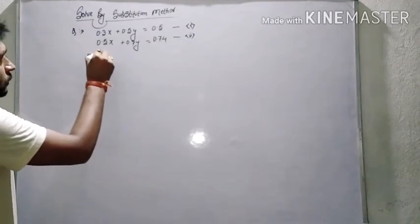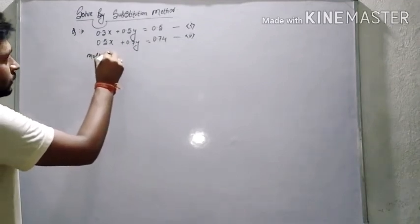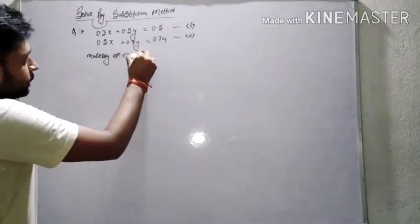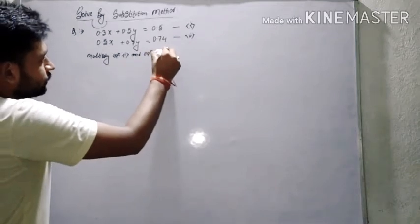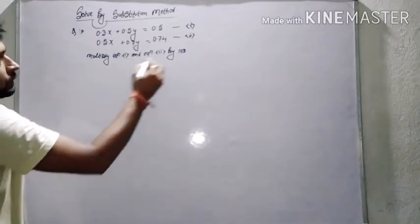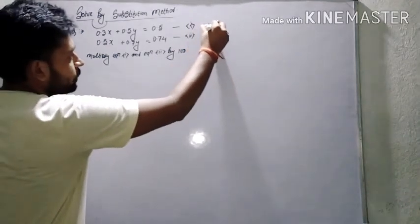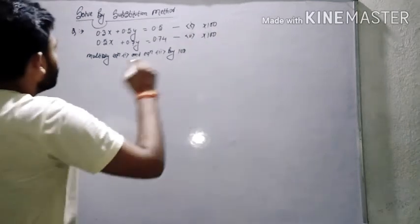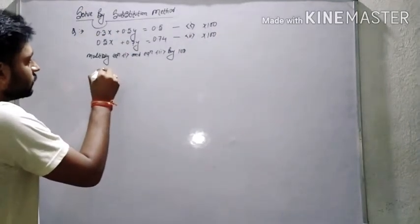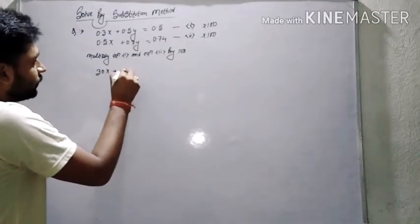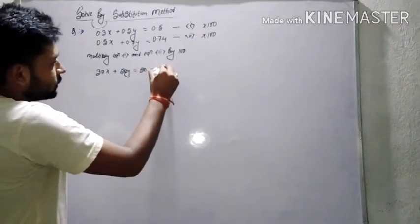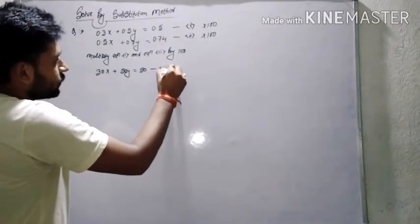Multiplying Expression 1 and Expression 2 by 100. Now, 0.3 into 100 gives us 30. So 30x plus 60y is equal to 60 — we get Expression 3.